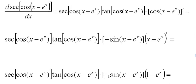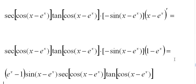Now it would look better if we distributed the negative here and got e to the x minus 1, brought it out front. So that's what I'm going to do. Notice I distribute that and bring it out front. Bring the sine out front also, which is no longer negative, and times the secant of cosine x minus e to the x times the tangent of cosine x minus e to the x.